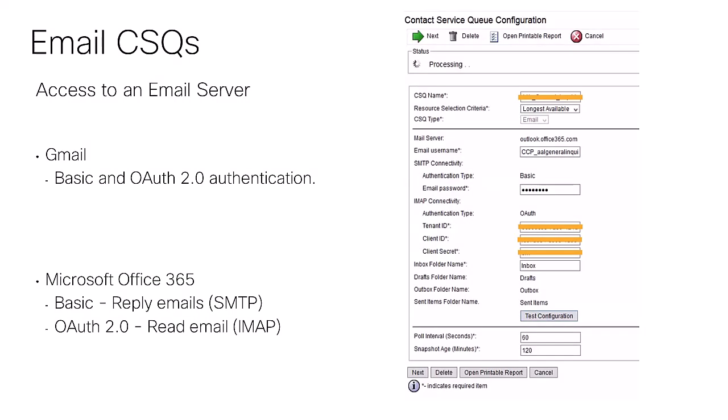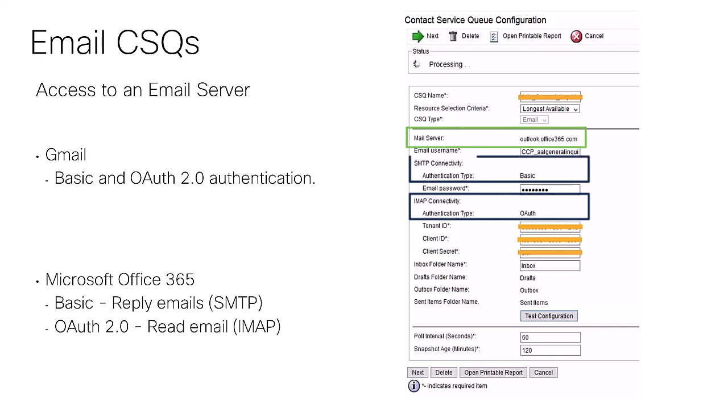You can also create specific CSQs to manage emails. To do so, you must have access to an email server — more specifically, Gmail and Microsoft Office 365 are the supported options. Similar to Facebook Messenger, you need email accounts and authentication tokens. Depending on the email server, you will have different authentication options. If you're implementing Gmail, you can use Basic or OAuth 2.0 authentication. However, if you're working with Office 365, basic authentication for reply emails via SMTP is the only option Cisco offers.